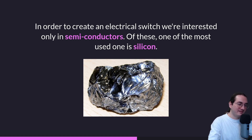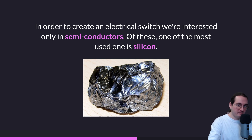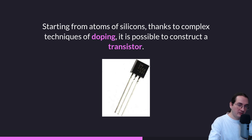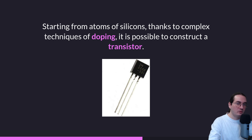To create an electrical switch we are interested in semiconductors, because with them we can control how much resistance is in the material. If we need to block electron flow we increase resistance; if we want electricity to flow, we allow it. Since we want an electrical switch, semiconductors are the answer. One of the most commonly used semiconductors is silicon, though the silicon used in transistors is enriched or processed silicon obtained through complex techniques known as doping.